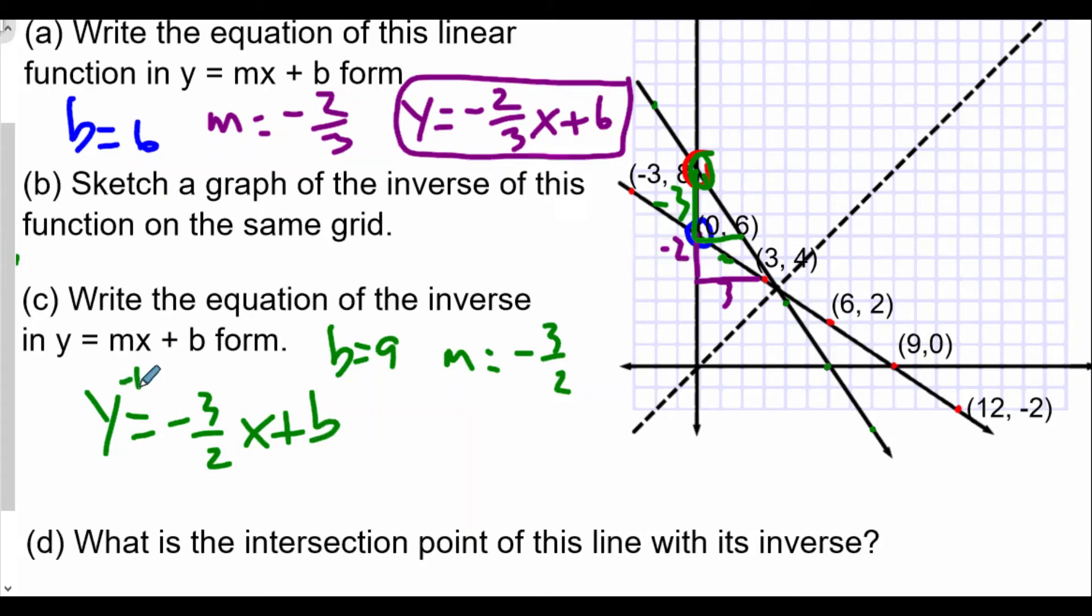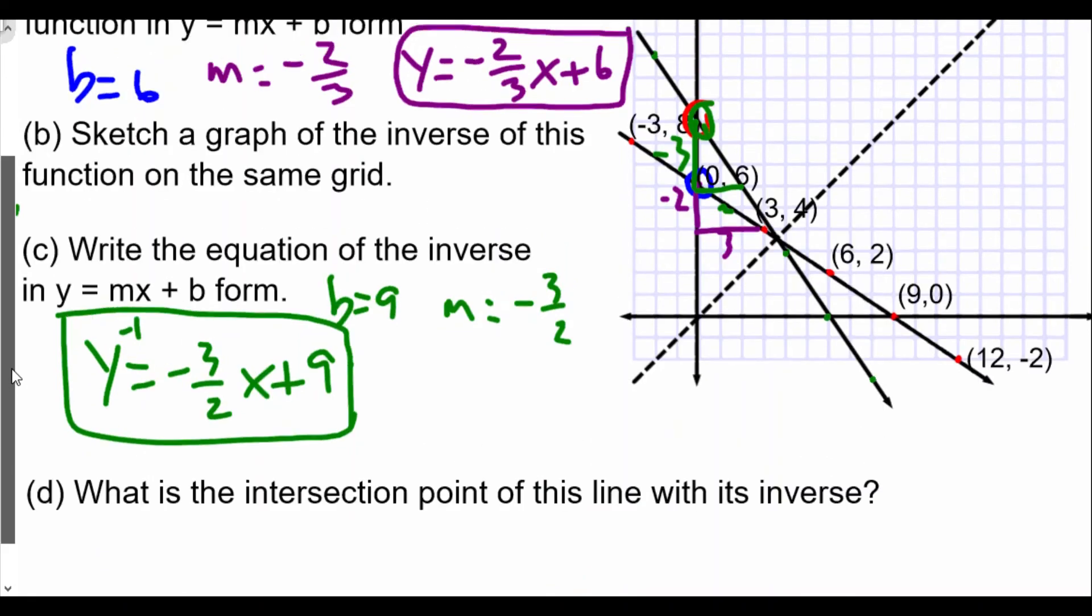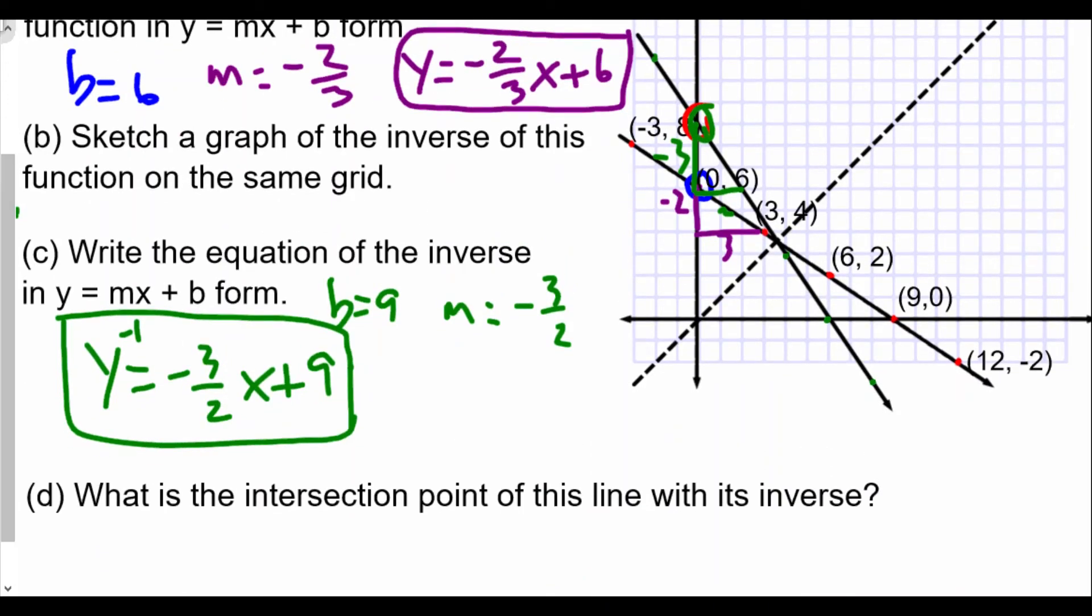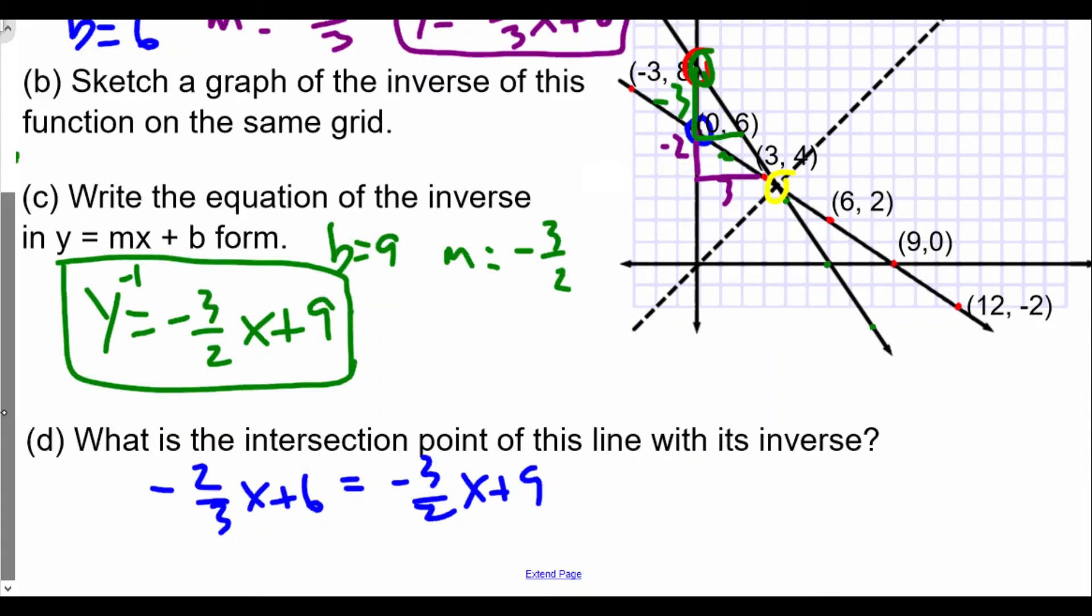Finally, what is the intersection point of this line with its inverse? We have our inverse here, y = -3/2x + 9. It should be on the line y = x. To find that, we set them equal to each other: -2/3x + 6 equals -3/2x + 9. The inverse and the y value should be the same at this point. This point can't be determined from the graph—we know it's greater than 3 but less than 4. We'll solve for x and then for the matching y value.